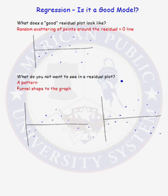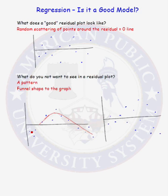What do you not want to see in a residual plot? You do not want to see a pattern or a funnel shape to the graph. In our first graph, we see a pattern. The residuals are negative, they become positive, and then they become negative again.